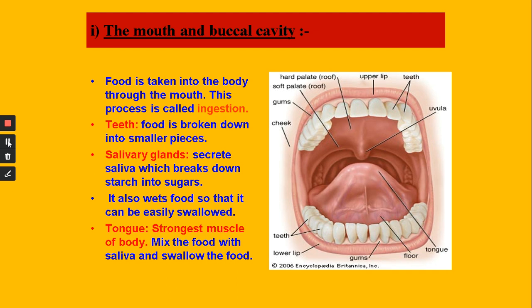Next are the salivary glands, which secrete saliva. Salivary glands help to digest starch into sugar, so digestion of carbohydrates starts in the mouth. The second function of saliva is that it wets the food so that there is no friction as it travels through the food pipe or alimentary canal, allowing it to be easily swallowed and passed on to the stomach. The tongue is the strongest muscle of the body — made up of muscles with no bone — and it mixes the food with saliva and helps in swallowing.